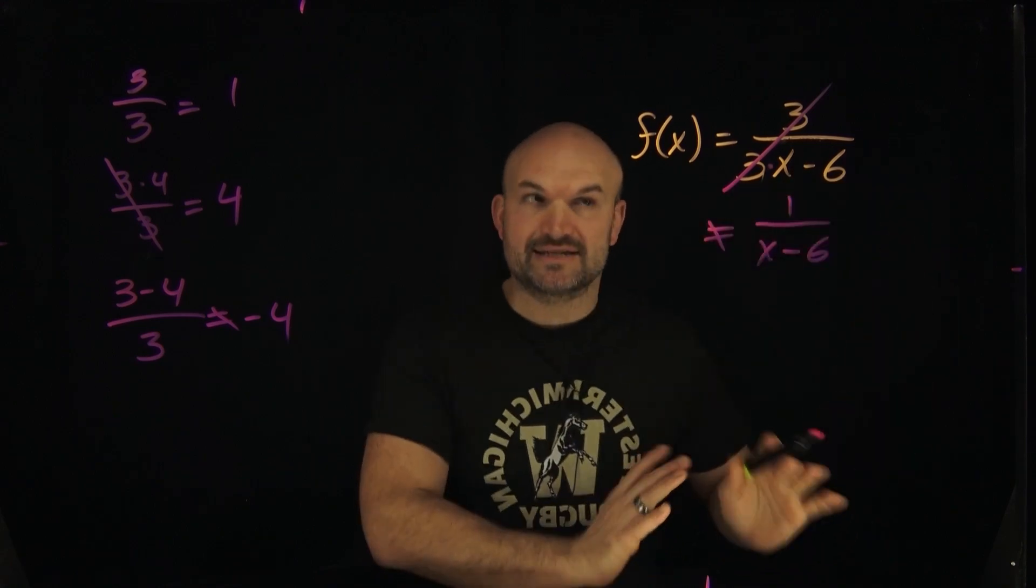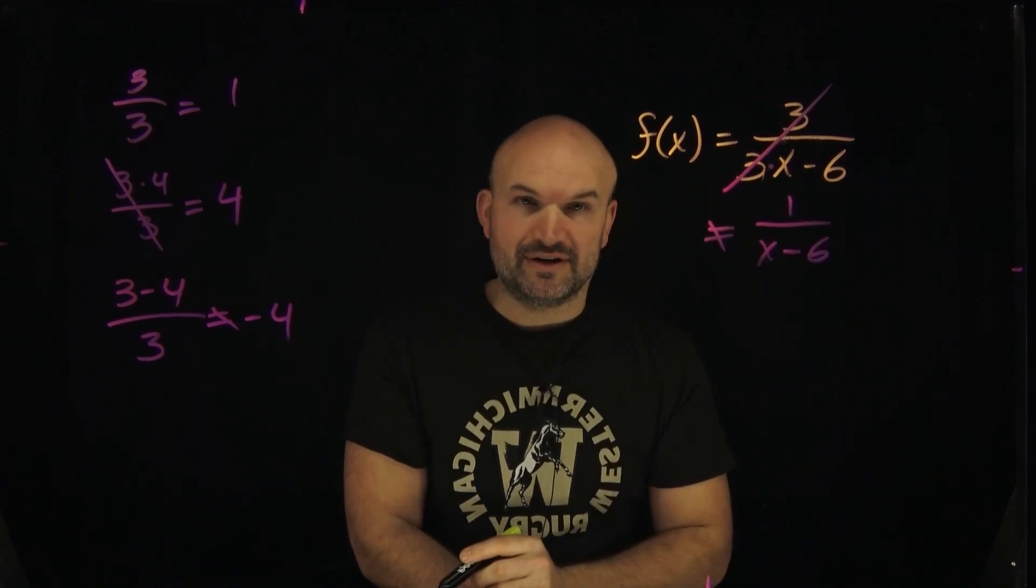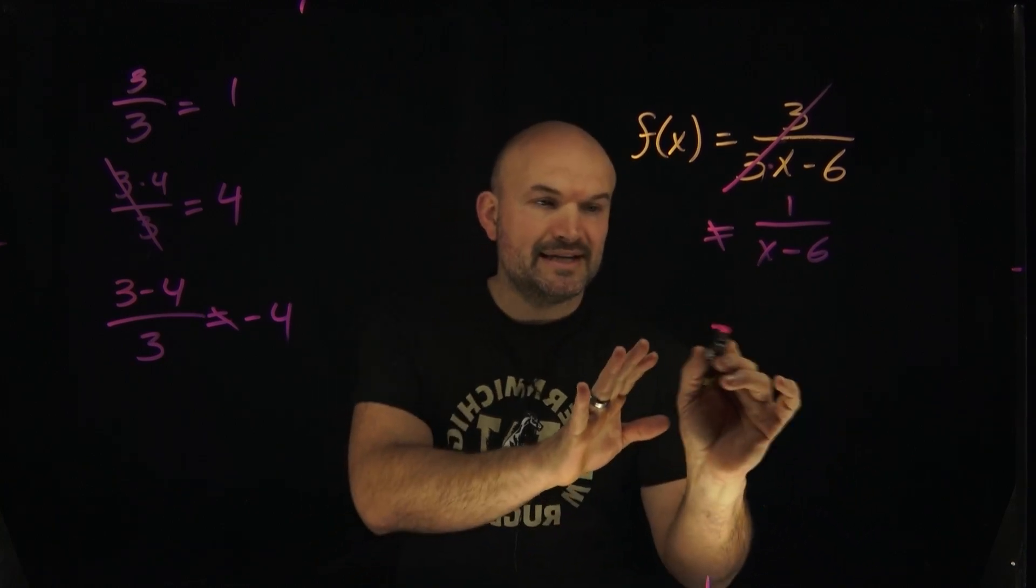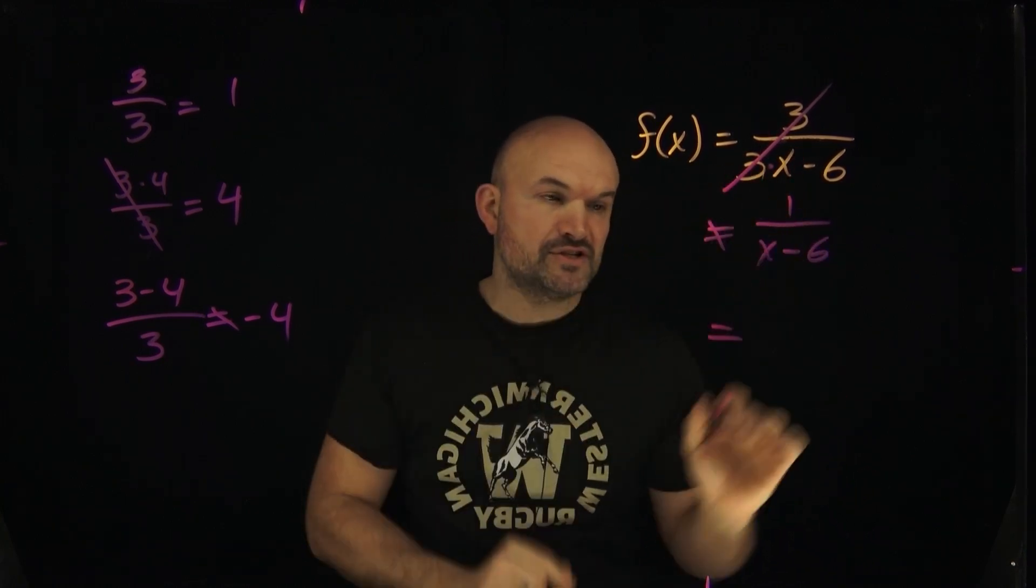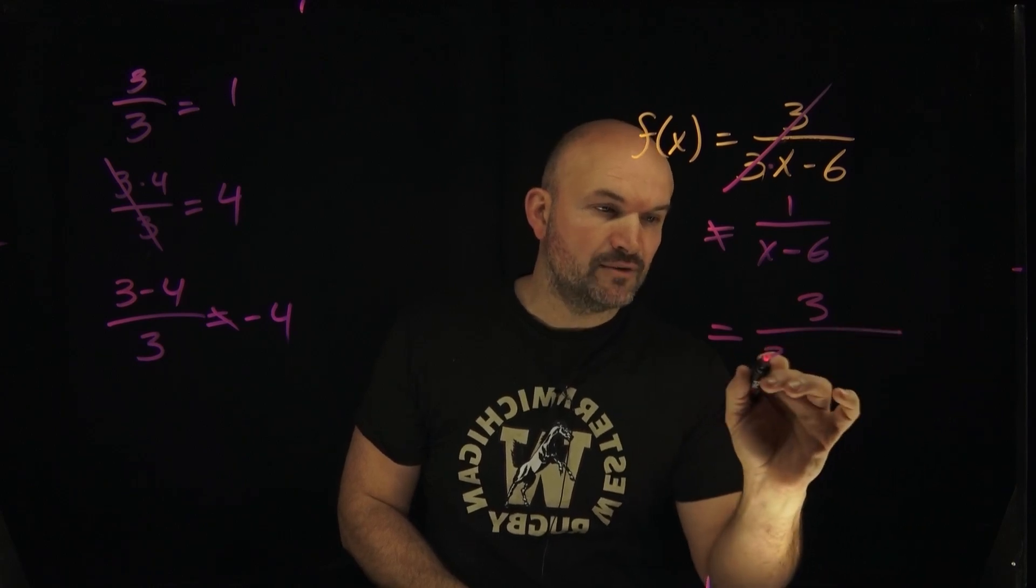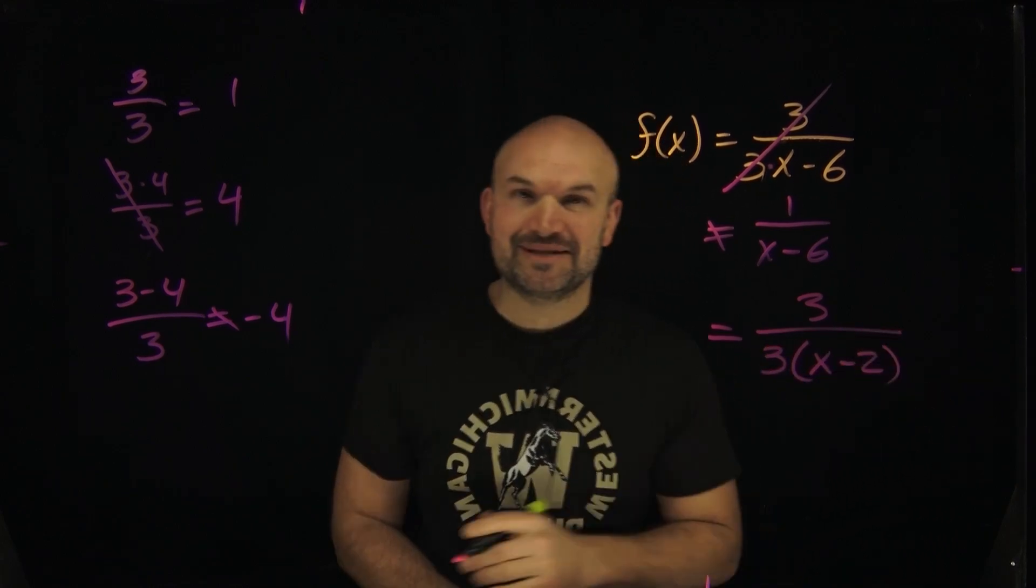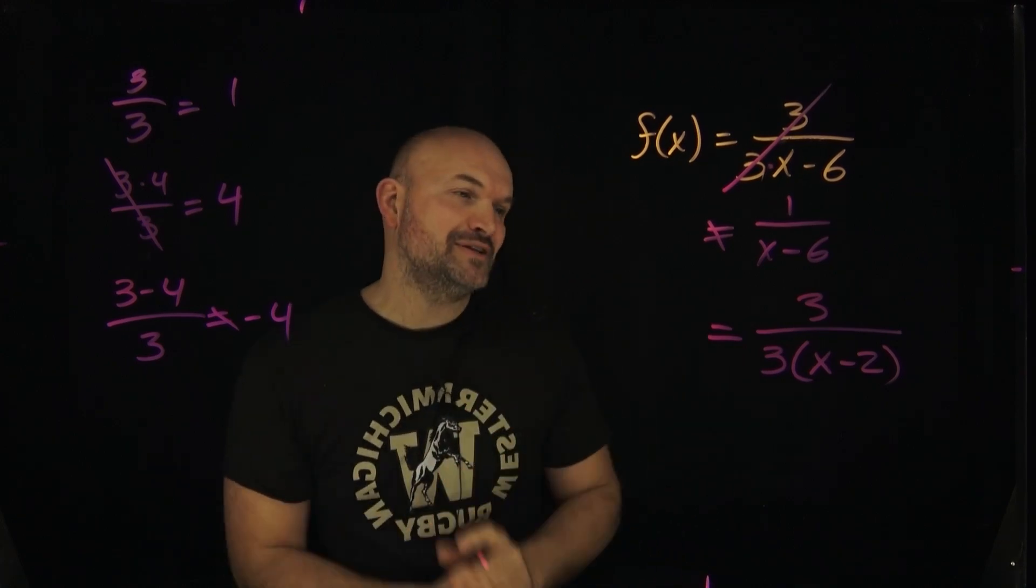But they forget there's this 3 in front of here. And this 3 actually messes everything up. So what we're going to do is, first thing you want to do is factor out this 3. Always look to factoring when you are simplifying rational expressions. That's why a lot of students hate rational expressions, because there's so much factoring that is involved.